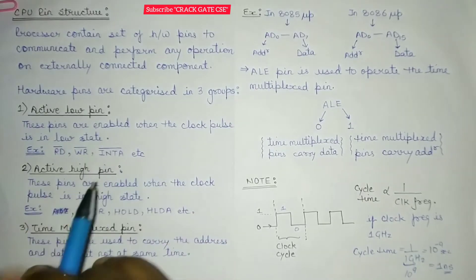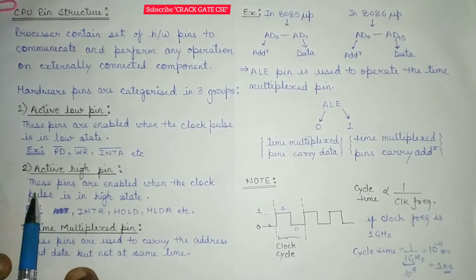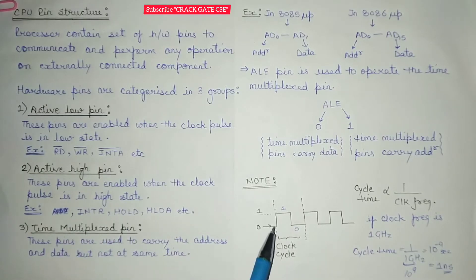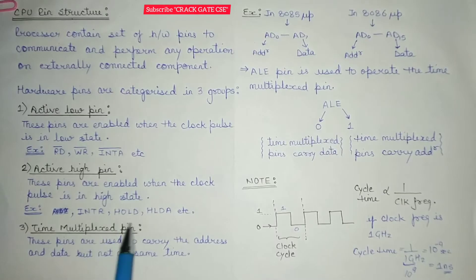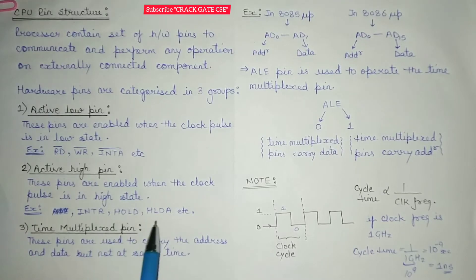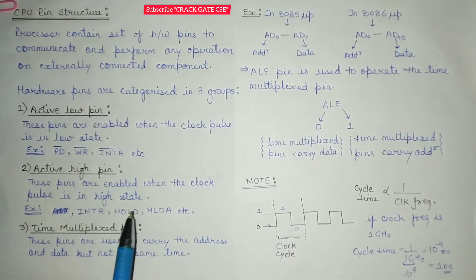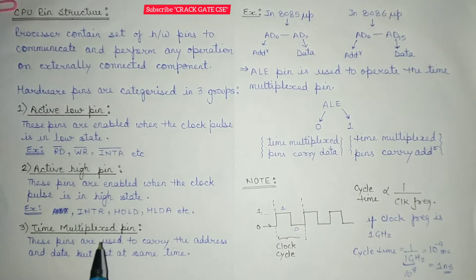Now what are active high pins? These pins are enabled when the clock pulse is in high state. That means if the clock pulse is 1, then these will be activated — like INTR, HOLD, HLTA, etc. We will be understanding these pins in more detail in this series of computer organization, including what is INTR, what is HOLD, what is LDA, and what is INTA.